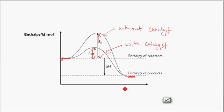In this video we looked at the difference between an endothermic reaction and an exothermic reaction, and we looked at energy profile diagrams. In any chemical reaction, bonds are broken and bonds are formed. When bonds are broken, energy is required; when bonds are formed, energy is released. If more bonds are formed than broken, the reaction is exothermic. If more bonds are broken than formed, the reaction is endothermic. In an endothermic reaction the enthalpy change is positive, and in an exothermic reaction the enthalpy change is negative.